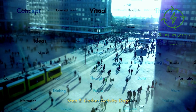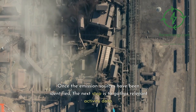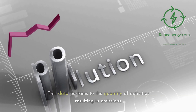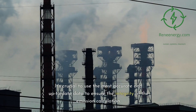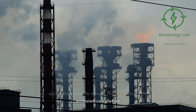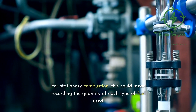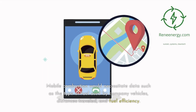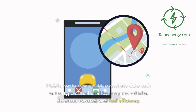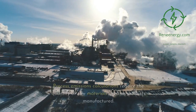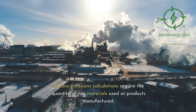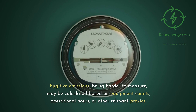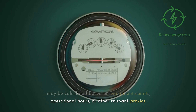Step 2: Gather Activity Data. Once the emission sources have been identified, the next step is to gather relevant activity data. This data pertains to the quantity of activities resulting in emissions, and it's crucial to use the most accurate and up-to-date data to ensure the integrity of the emission calculation. For stationary combustion, this could mean recording the quantity of each type of fuel used. Mobile combustion would necessitate data such as the type of fuel used by company vehicles, distances traveled, and fuel efficiency. Process emissions calculations require the quantity of raw materials used or products manufactured. Fugitive emissions, being harder to measure, may be calculated based on equipment counts, operational hours, or other relevant proxies.